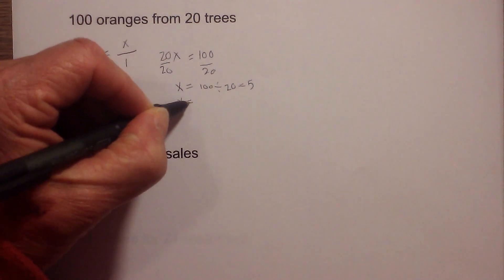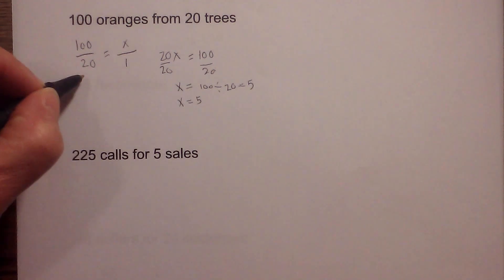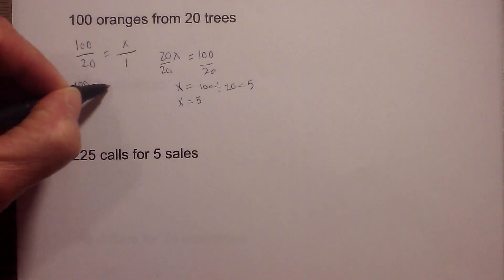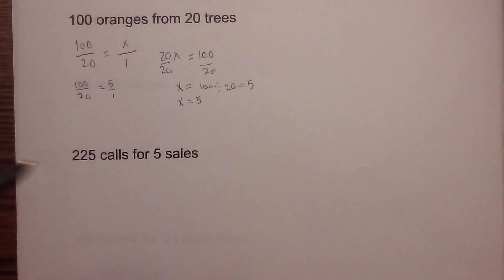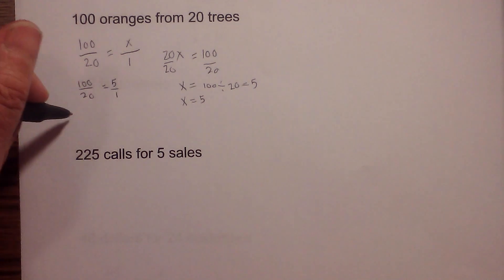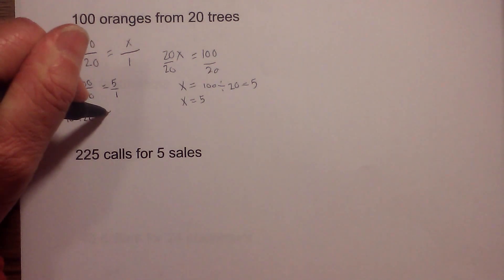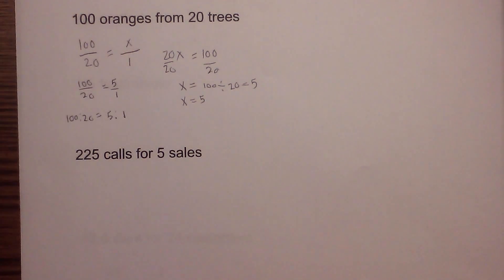So x is equal to 5. I now will rewrite this as 100 over 20 is equal to 5 over 1. I could write this as 100 colon 20 is equal to 5 colon 1.